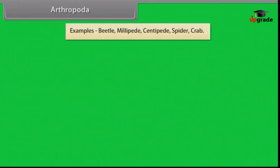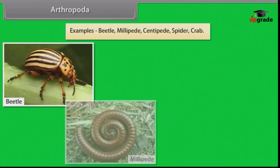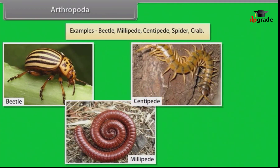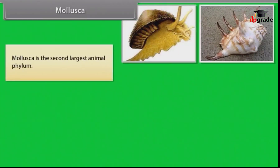Examples of arthropods include beetle, millipede, centipede, spider and crab.